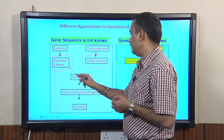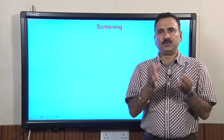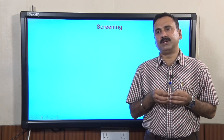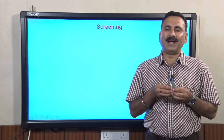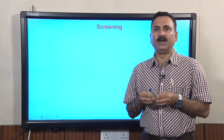So the next topic — to get the gene of interest — is that you have to screen either the genomic library or the cDNA library. When we say screening, that means you have a variety of molecules and among those you have to choose a specific molecule, which means the tools you use must also be specific for that particular molecule and should not have any cross-reactivity with other molecules.